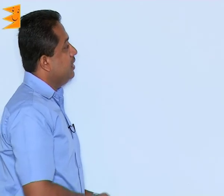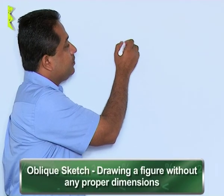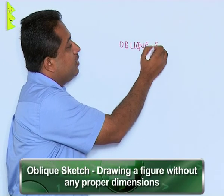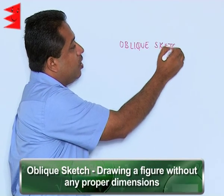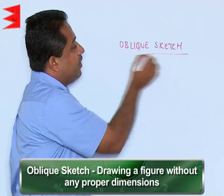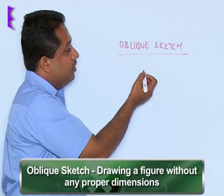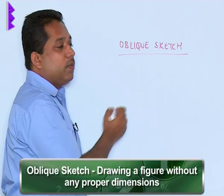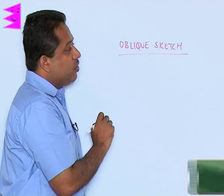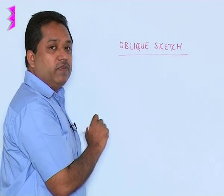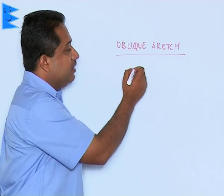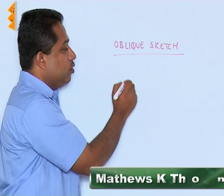There are two types of sketches. One is the oblique sketch, where we draw a figure of a cube or cuboid using a rough diagram without proper dimensions. We can also draw it with exact dimensions using isometric dots, which is called an isometric drawing.